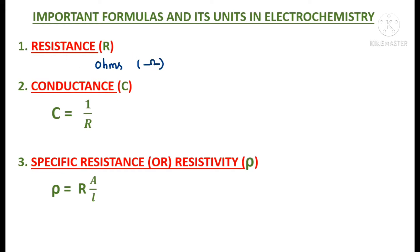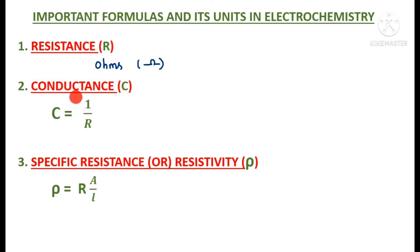What do you mean by conductance? Conductance is represented by capital C. It is the ease with which current flows through a conductor — a material or substance which allows current to pass through. Conductance is the reciprocal of resistance, that is, C = 1/R.